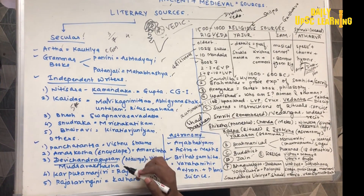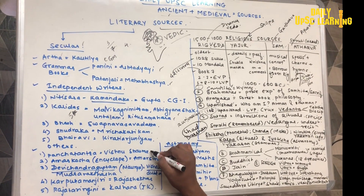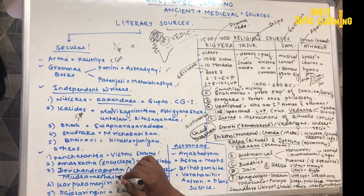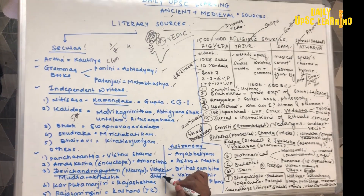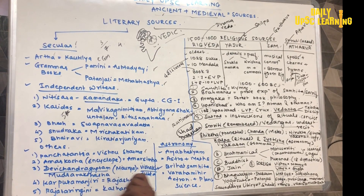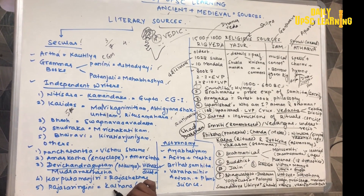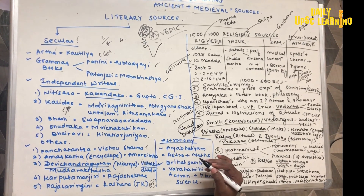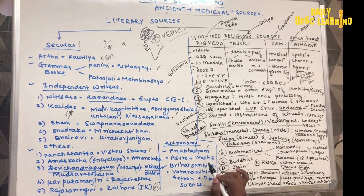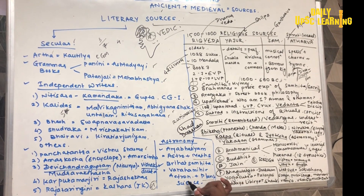Other writers: Pancha Tantra was written by Vishnu Sharma. Amar Kosh is an encyclopedia written by Amar Simha — this is easy to remember. Devi Chandragupta and Mudra Rakshasa were written during the Maurya period by Vishakadatta. Karpooramanjari was written by Rajashekhara. Rajatarangini was written by Kalhana — it was the history of Jammu and Kashmir, this is a PT pointer. Aryabhata wrote Aryabhatiyam, which included both maths and astronomy. Brihat Samhita was written by Varahamihira, which included plant sciences along with astronomy.